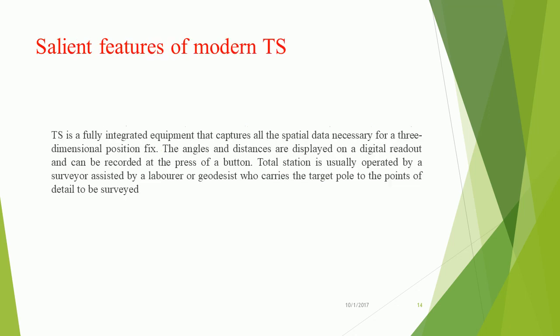Salient features of modern total station: The TS is a fully integrated equipment that captures all the spatial data necessary for a three-dimensional position fix. The angles and distances are displayed on a digital readout and can be recorded at the press of a button. It is usually operated by a surveyor assisted by a laborer or geodesist who carries the target pole to the points of detail to be surveyed.